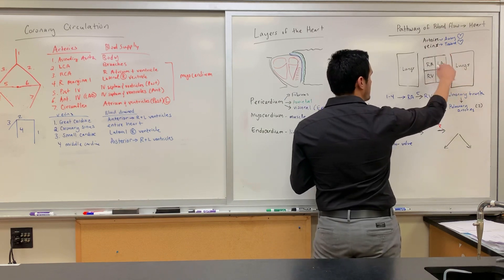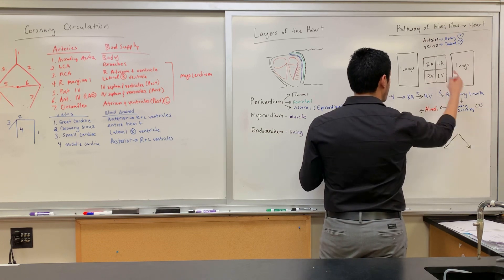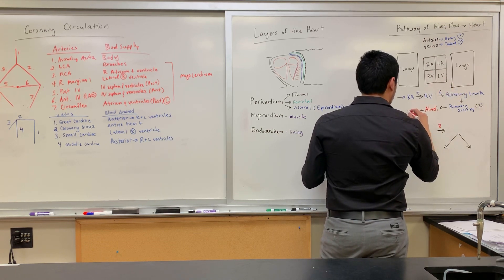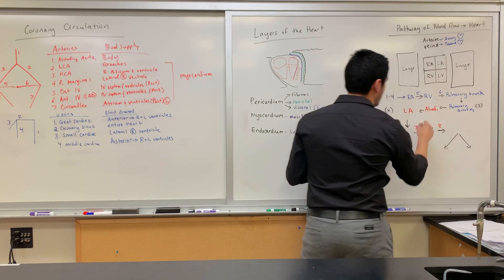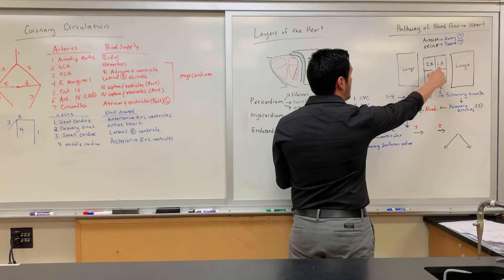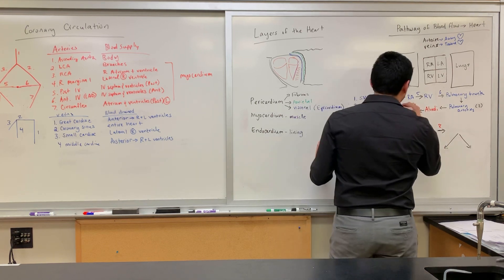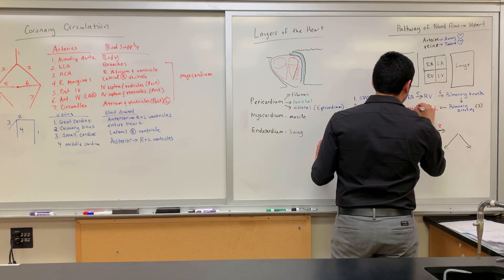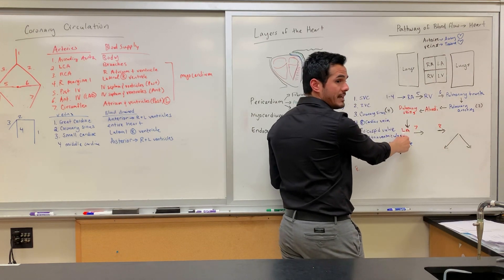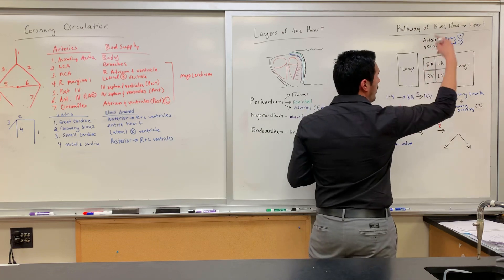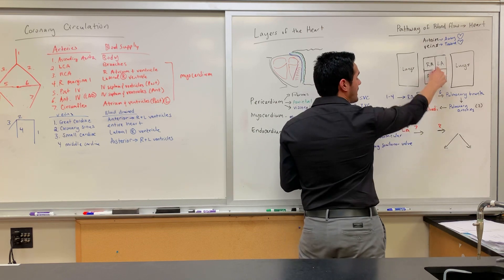Once oxygenated at the alveoli, the blood needs to get back into the heart. From the alveoli within the lungs, blood travels through the pulmonary veins, which lead into the left atrium. Remember: veins go toward the heart, so the pulmonary veins are dumping oxygenated blood back into the left atrium.